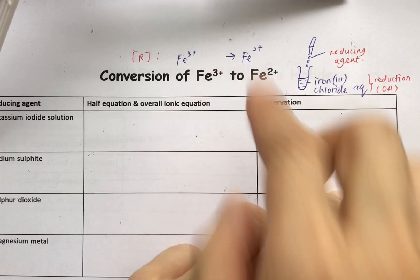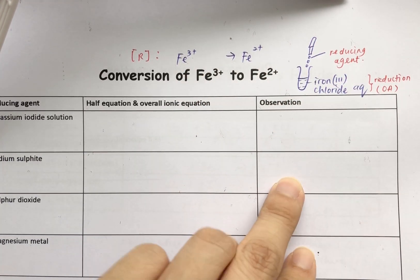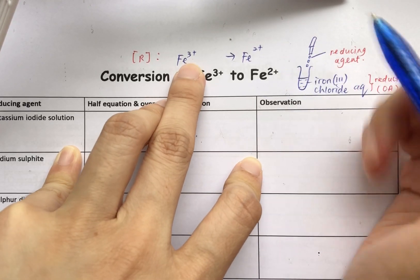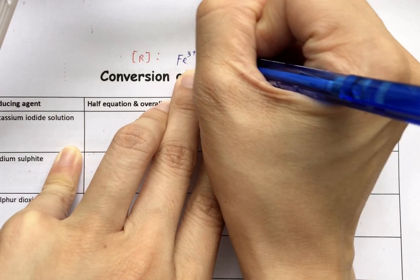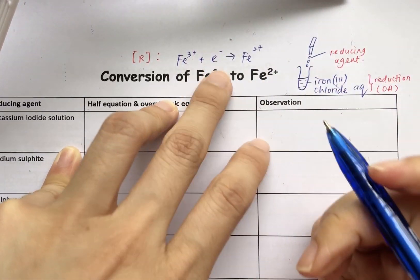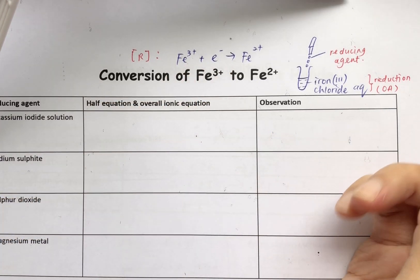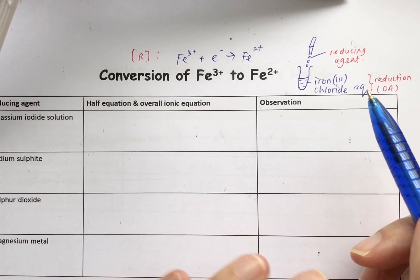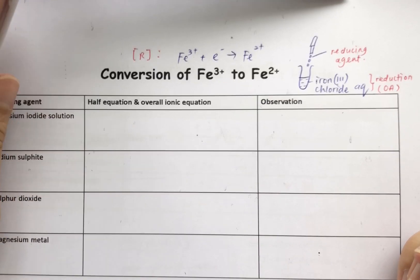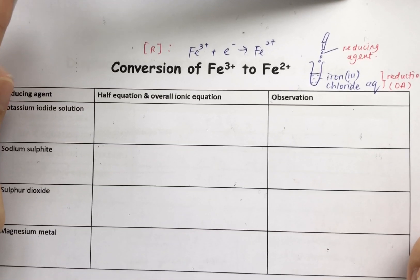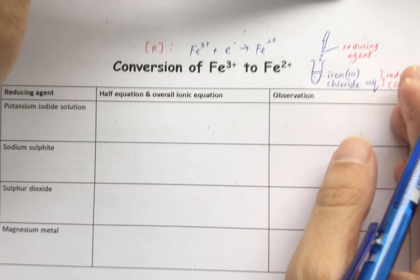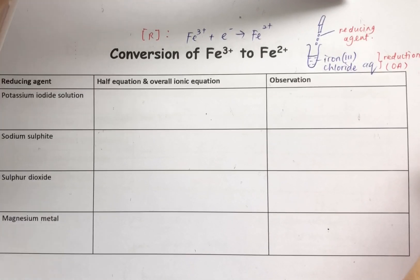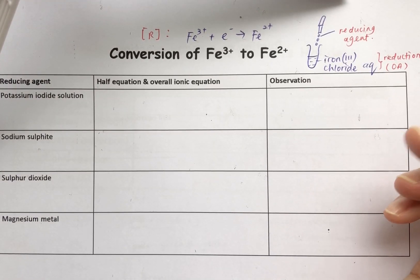To complete our ionic equation for Fe3+ to Fe2+, it's very simple. This side is more positive, so just add an electron on the left-hand side. Now we are going to look at the examples of reducing agent that we can use for the conversion of Fe3+ to Fe2+.